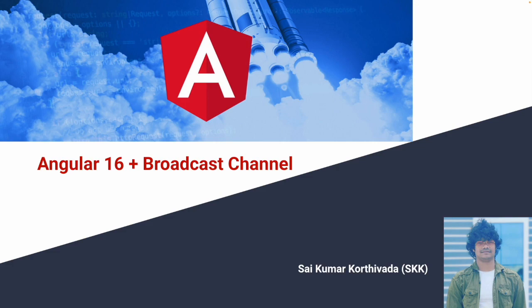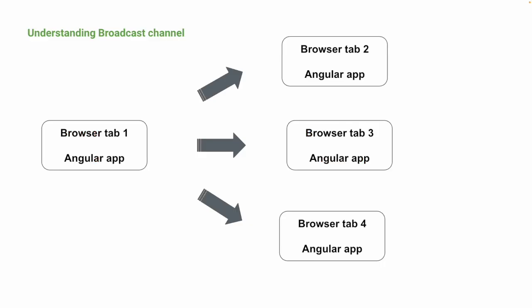Let's understand what is a broadcast channel. Here is an example: I am running an Angular application in one browser tab and the same application in three different tabs. When the user logs out from one tab, I want to log out all the places wherever it is logged in. So when I click logout on the profile page, all other tabs should navigate back to the login page. This is how the broadcast channel works — it helps us send data to other tabs running the same application. The sending tab is the source and the other tabs are the receivers or targets.